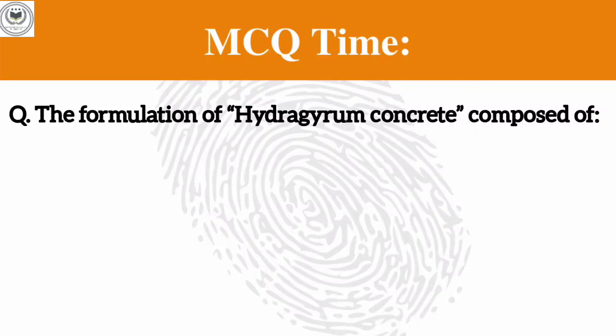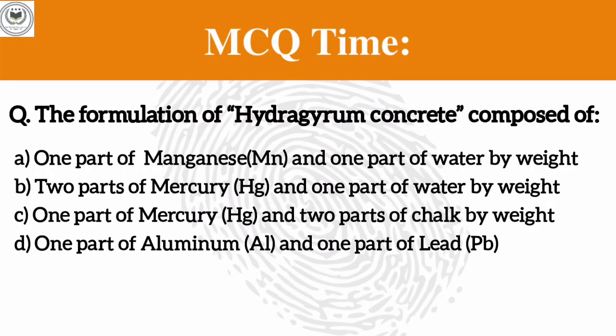We have come to the end of this video. MCQ time: The formulation of Hydrargyrum Concreta is composed of — Option A: one part of manganese and one part of water by weight. Option B: two parts of mercury and one part of water by weight. Option C: one part of mercury and two parts of chalk by weight. Option D: one part of aluminium and one part of lead by weight. Post your answers in the comment section.